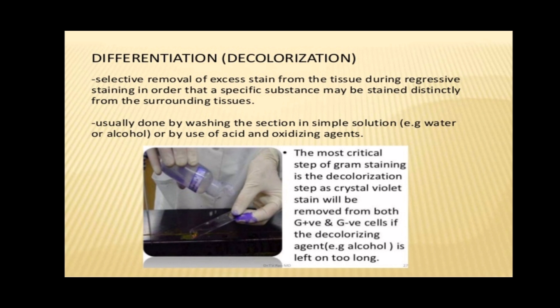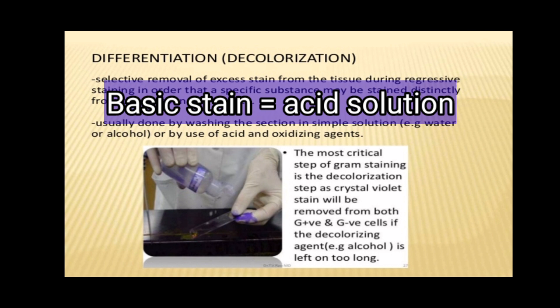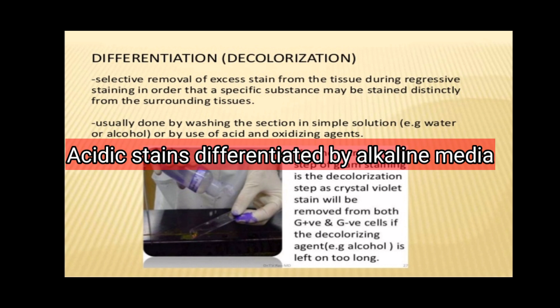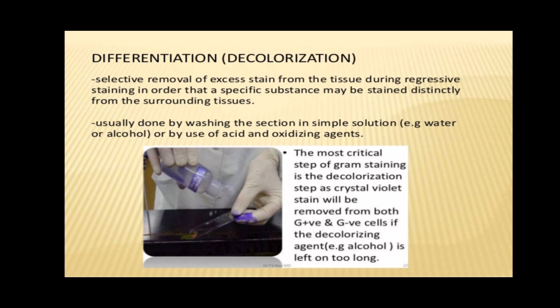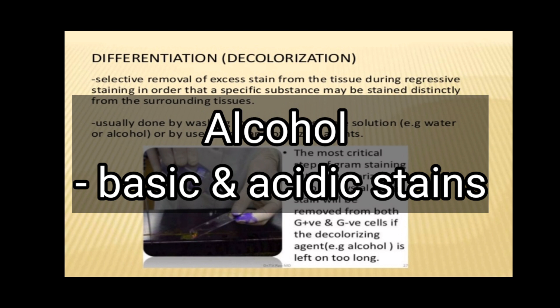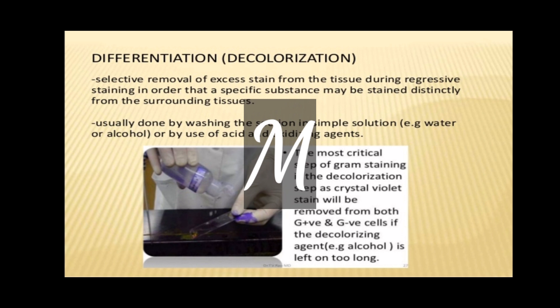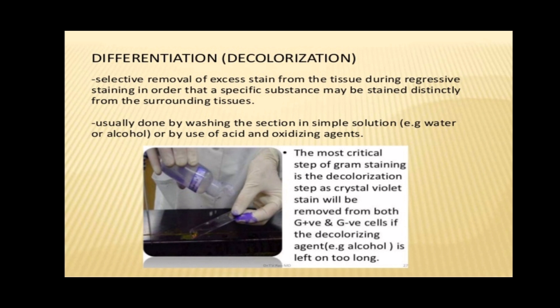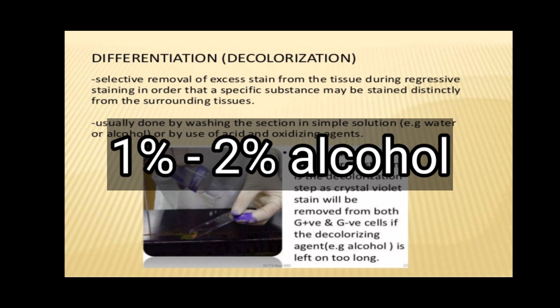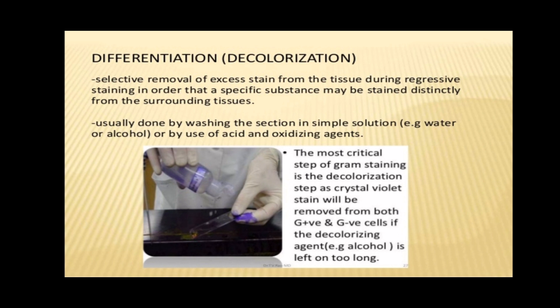In general, if the primary stain used is a basic dye, differentiation is carried out by an acid solution, while an alkaline medium is used for differentiation after applying an acidic dye. Alcohol acts as a differentiator for both basic and acidic dyes, probably by simply dissolving out the excess dye. A mordant can also act as a differentiating agent — mordants such as iron alum can oxidize hematoxylin to a soluble, colorless compound so the tissue component becomes decolorized. If a section stained by a mordant dye is allowed to remain in a differentiating agent such as 1–2% alcohol, all the dye will be removed, which is done as a preliminary step in re-staining a faded slide.